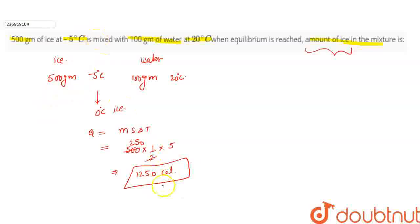This heat is required if 500 gram ice which is at minus 5 degrees has to reach 0 degree ice. Now let's see, if this water which is 100 grams at 20 degrees Celsius is brought to 0 degree water, then how much heat will it release?